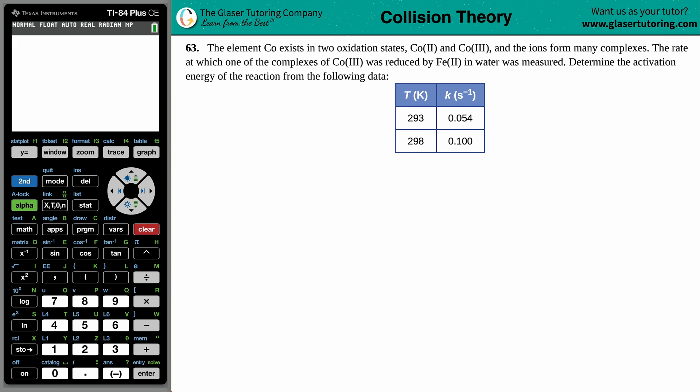Number 63. The element cobalt exists in two oxidation states, cobalt 2 and cobalt 3, and the ions form many complexes. The rate at which one of the complexes of cobalt 3 was reduced by iron 2 in water was measured. Determine the activation energy of the reaction from the following data. And lovely data set, two points for us here.